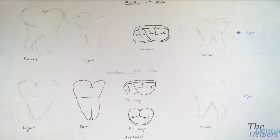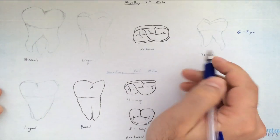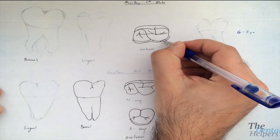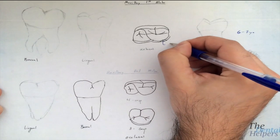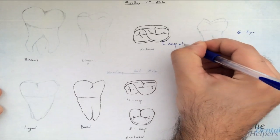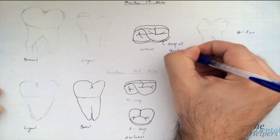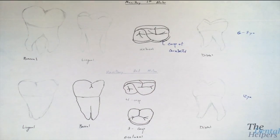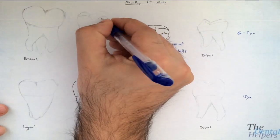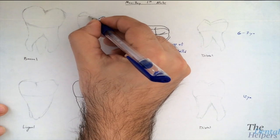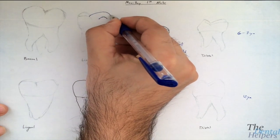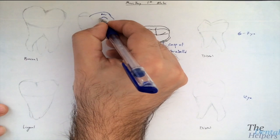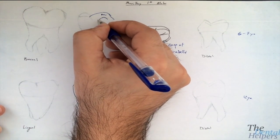Now let's look at the cusps. There are four and a half cusps. The reason I say four and a half is there's the cusp of Carabelli, which is considered a fifth cusp. In essence, it's a small, non-functional cusp. In this drawing, it's a little faint, but we have this large mesial lingual cusp, and attached to it is the cusp of Carabelli — the fifth cusp.